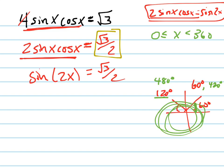Alright, so long story short, 2x either equals 60 degrees or it equals 120 degrees or it equals 420 degrees or it equals 480 degrees.